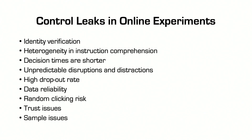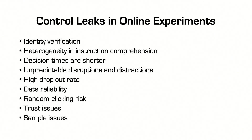High dropout rate is another issue. In the lab, you very rarely have a situation where someone says they've changed their mind and leaves. But online, people could leave for whatever reason, or even for no good reason, and they will not complete all of the tasks. This is a particularly bad problem for group experiments. If you have an experiment where people interact in groups and one subject drops out, you can basically throw away the entire group observation.